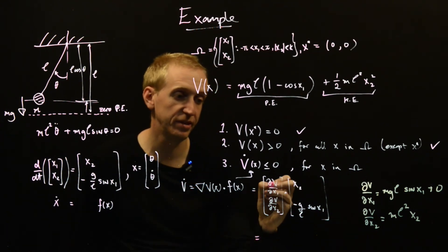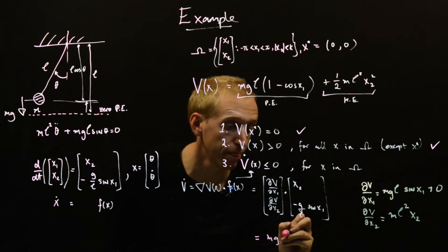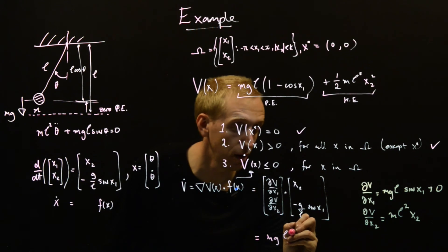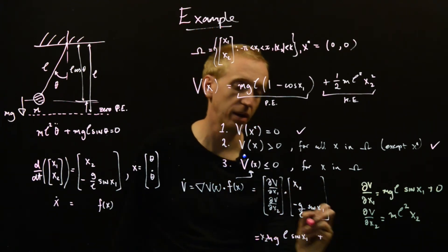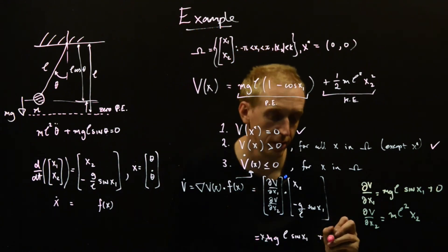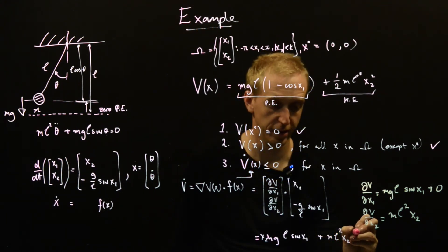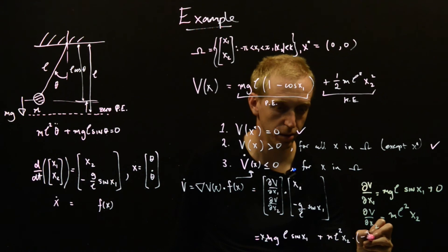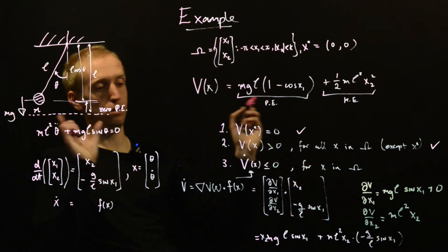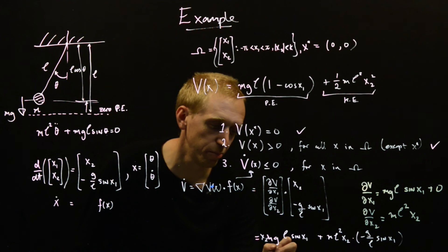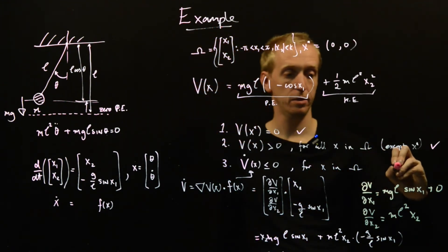So all that remains is to take this dot product and work everything out. So the first thing we have is dV dx1 multiplied by x2, so we get M G L sine x1, and this whole thing is multiplied by x2, plus the product here. And this is M L squared x2 multiplied by minus G over L sine x1. Now you see, everything disappears, and this is equal to zero. But this is less than or equal to zero. So check.